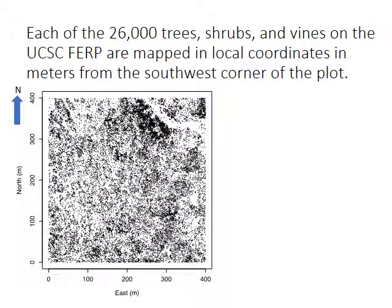This is a map of the UCSC Forest Ecology Research Plot. It is oriented so that the y-axis runs north-south and the x-axis runs east-west. Each dot on the map represents an individual tree. Each of the 26,000 trees, shrubs, and vines on the FERP have been mapped using a local coordinate system measured in meters. The southwest corner of the plot, indicated by a blue donut, is at 0 meters east and 0 meters north.